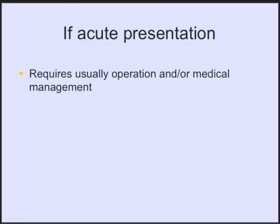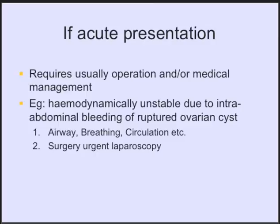In case of an acute presentation, that usually requires an operation and/or medical management. For instance, if a woman is hemodynamically unstable due to rupture of an ovarian cyst with intra-abdominal bleeding, comparable to an ectopic pregnancy, the first measure would be to do the ABC — airway, breathing, circulation — and this situation usually requires urgent laparoscopy.